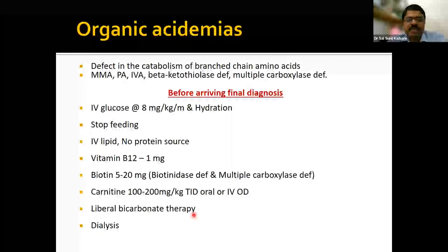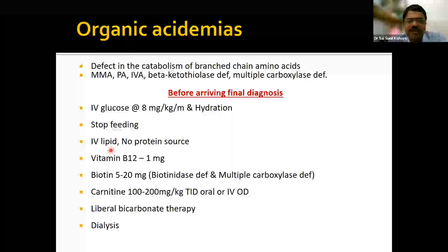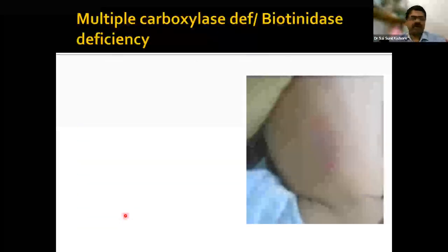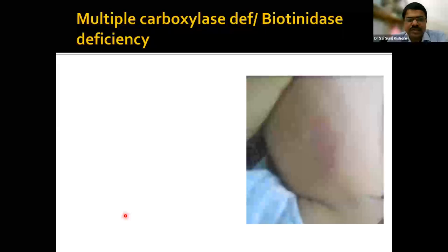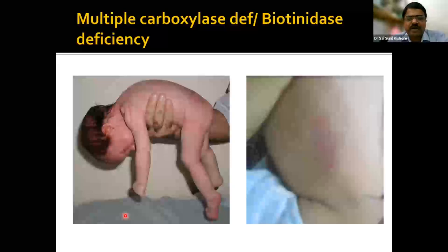Organic acidemias present with acidosis, raised ammonia, ketosis, hypoglycemia, negative ferric chloride test, bone marrow suppression, and secondary carnitine deficiency. Initial management before the final diagnosis: start IV glucose at 8 mg/kg/min, maintain hydration and increase dextrose, stop feeding. Give IV lipids but no protein and no amino acids. Give vitamin B12 and biotin at higher doses up to 20 mg/day, carnitine for secondary deficiency, liberal bicarbonate therapy. Dialysis may be needed — one of our babies underwent dialysis before the final diagnosis was reached.